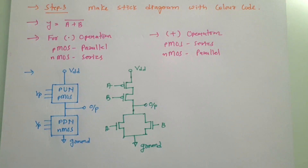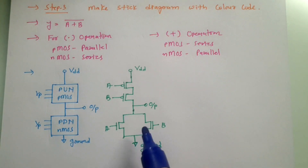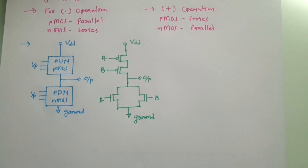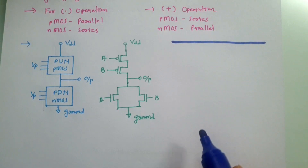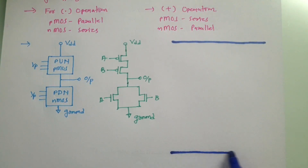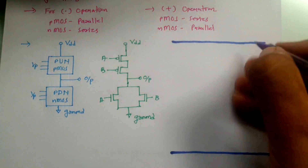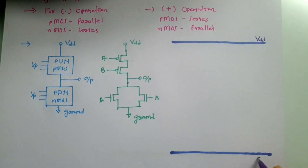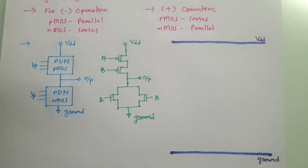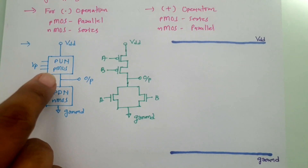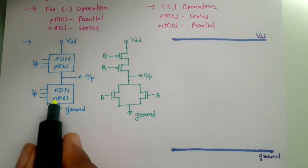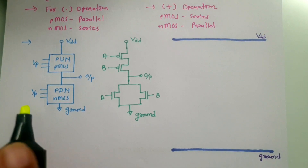Now I will explain how to draw the stick diagram. First we need VDD and ground, drawn in blue color. VDD is on the upper side and ground is on the lower side. The upper side has the pull-up network made of PMOS and the lower side has the pull-down network made of NMOS.